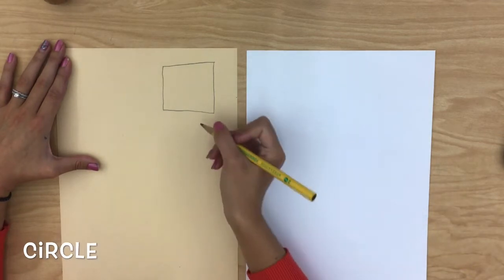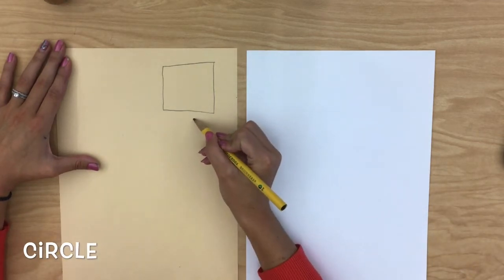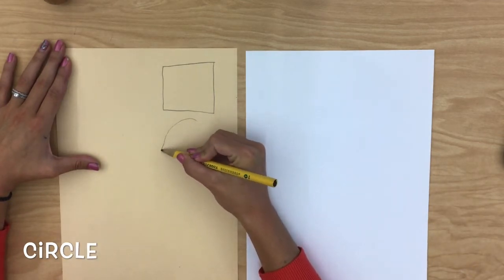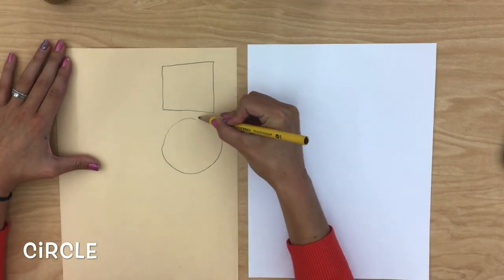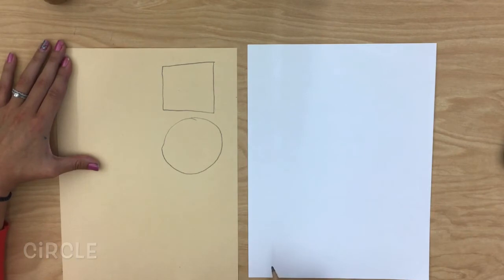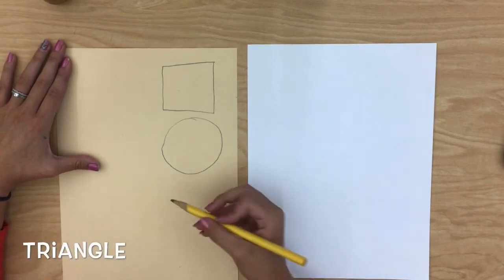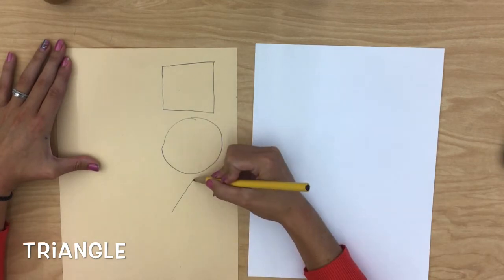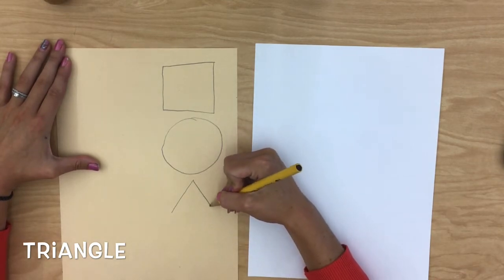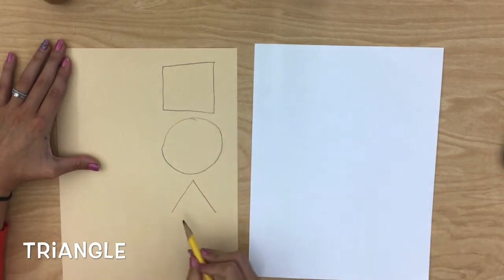Next we're going to talk about a circle. A circle, the tricky one, it goes all the way around and comes back like a wheel on a car.